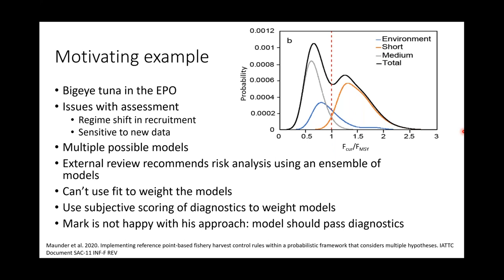The assessment issues included a regime shift in recruitment, which was thought to be an artifact of the model assumptions, and also sensitivity to the addition of new data. There were multiple models that would improve these issues. When we had an external review of the assessment, the external review recommended that we do some kind of risk analysis using an ensemble of models. But one of the big issues we had was not being able to correctly get the data weighting right, and because all the models tended to be somewhat misspecified, we couldn't really use the fit to the data to weight the models in the ensemble. So we came up with a subjective scoring process based on the diagnostics, and that was used to weight the models.